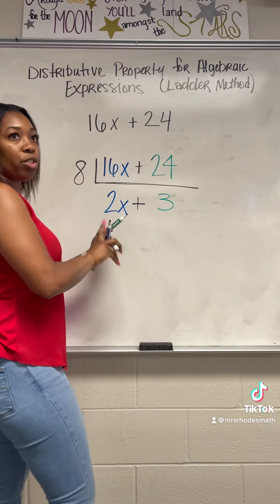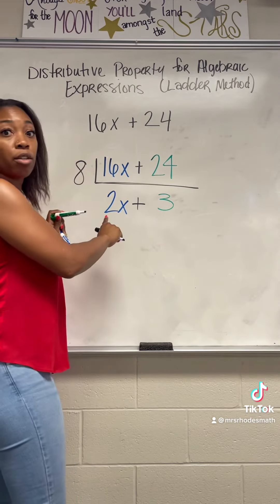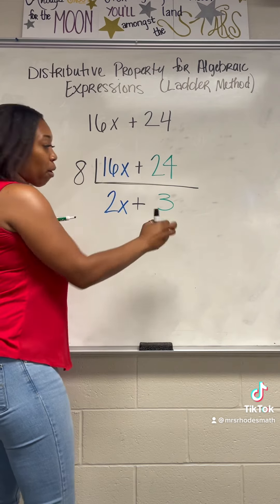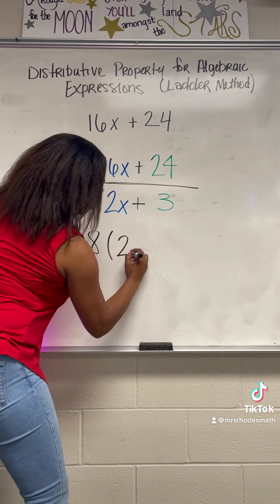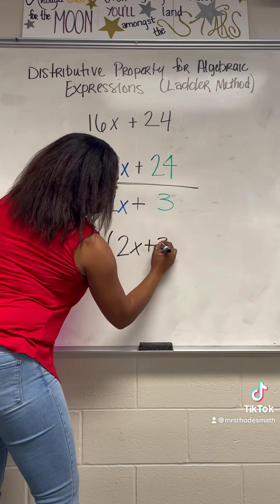Now I'm going to rewrite my problem using the distributive property. So I have 8 times (2x plus 3).